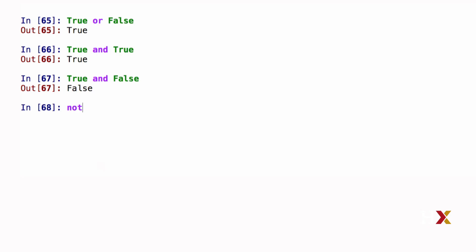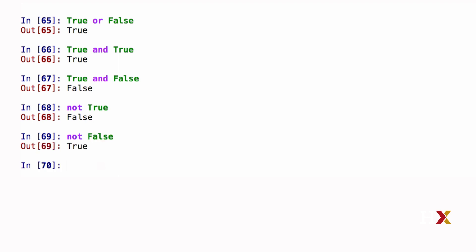Finally, we have the not operation, which simply negates the value of the object. So if we say not True, Python gives us False. And if we say not False, Python returns True.